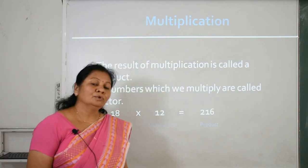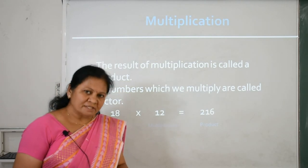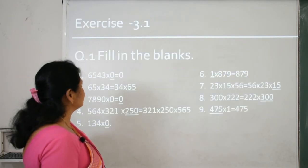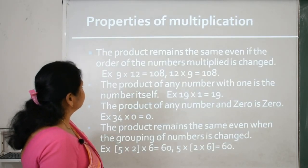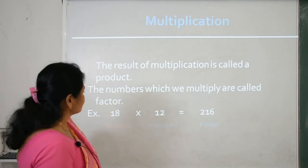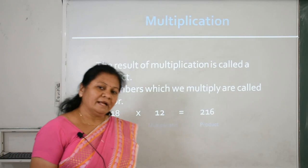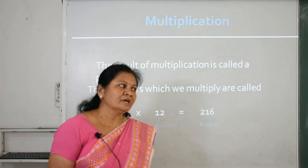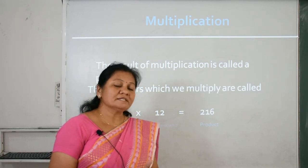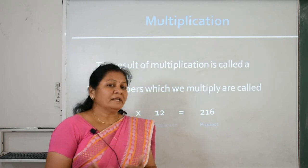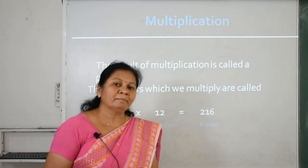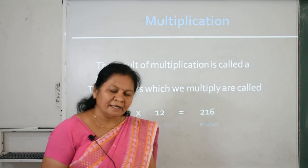Now, multiplication — you know what multiplication means? Multiplication is the procedure of repeated addition. You know what repeated addition means? Repeated addition means 25 plus 25 is equal to 50. So if you multiply 25 by 2, the answer is 50. Multiplication means repeated addition.